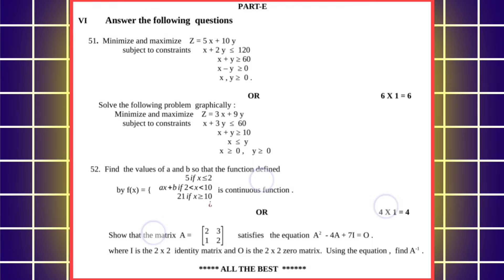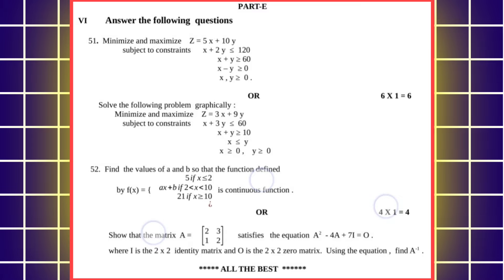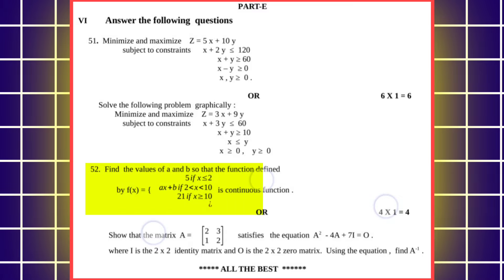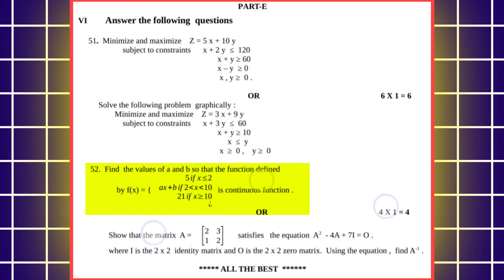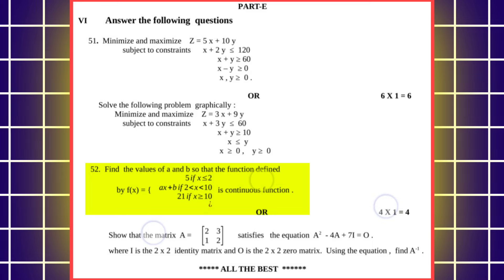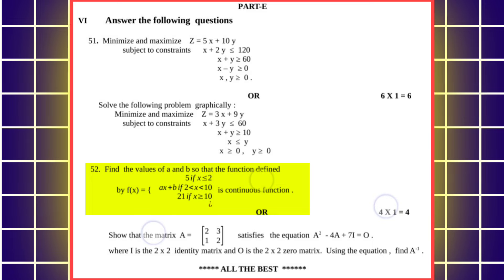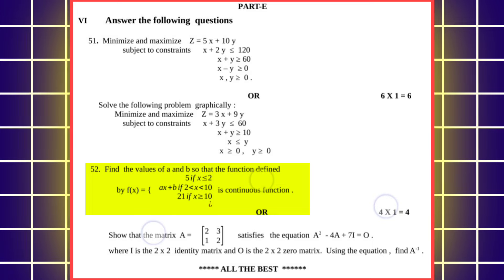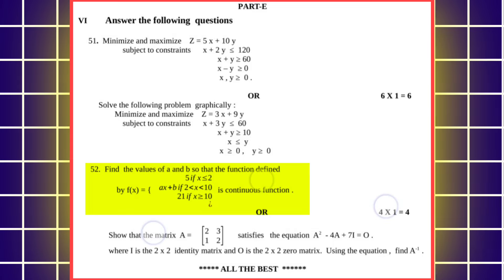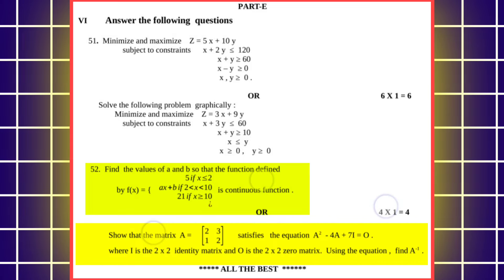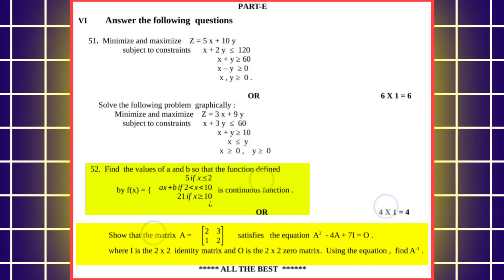For the 52nd question, the first choice will be from the continuity portion — finding the value of A, and you have to determine if the function is continuous. The second choice will be from the matrix chapter, where you have to solve equations using A inverse.